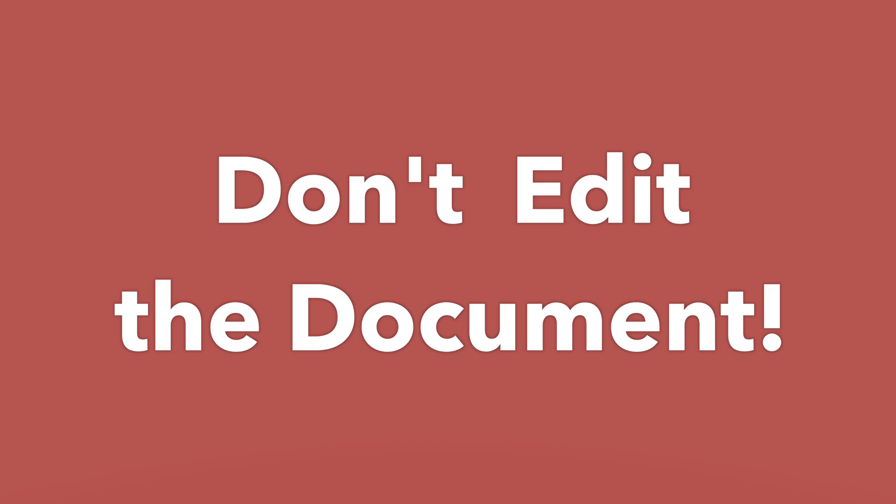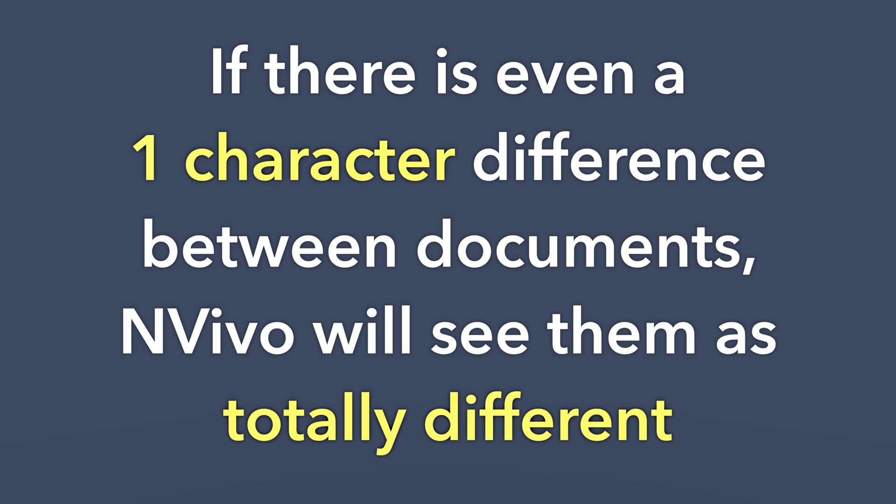There is one really important thing that you cannot do when using the asynchronous collaboration process: don't edit the document. If you're reading along and coding and you spot a typo, and you click to edit and change it — even one character difference from your teammates' version means NVivo will see it as a different document and won't merge those documents together. It won't merge your coding with your teammates' coding, and then you have to figure out how to fix it and try to merge it again.